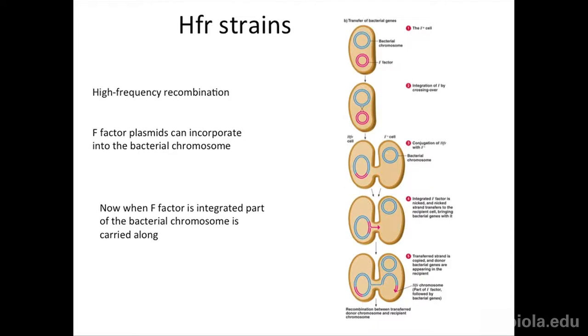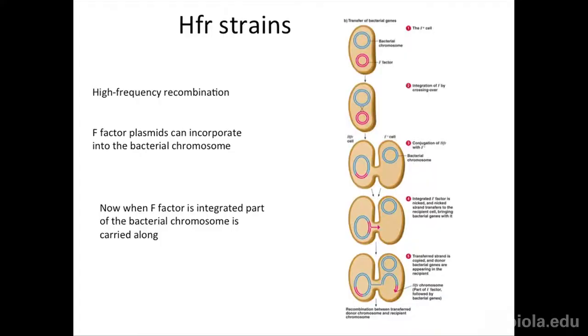Normally a bacteria has one copy of every gene — there's no dominant and recessive situation because there's only one allele. But now I could actually have two alleles for the region that came in. It's not the entire genome, just the portion close to where the F-factor integrated. So it's only going to act diploid for things that were adjacent to the integration site.